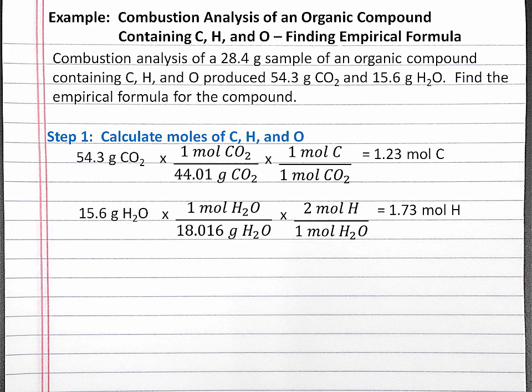To calculate the moles of oxygen in our sample, we first have to determine the mass of oxygen. We know that the total mass of our sample is composed of the mass of carbon, the mass of hydrogen, and the mass of oxygen. So we can solve for the mass of oxygen by taking the mass of the sample, subtracting the mass of carbon, and the mass of hydrogen.